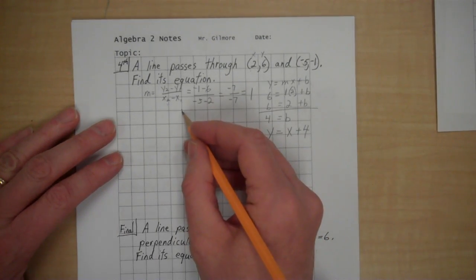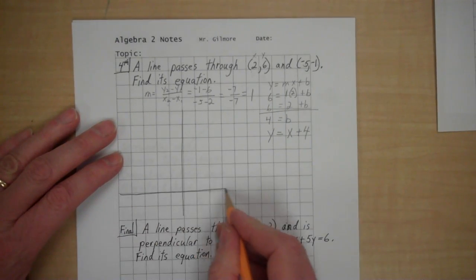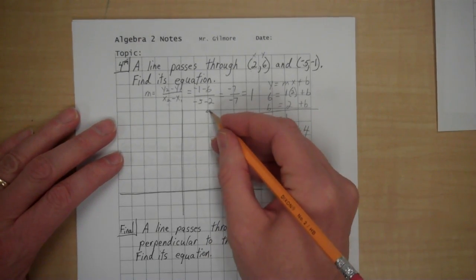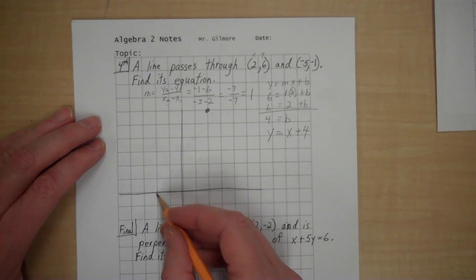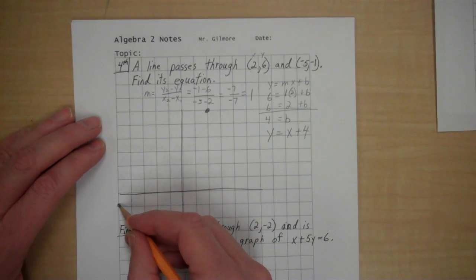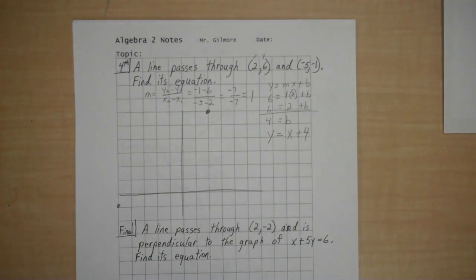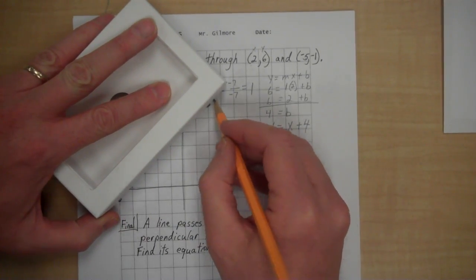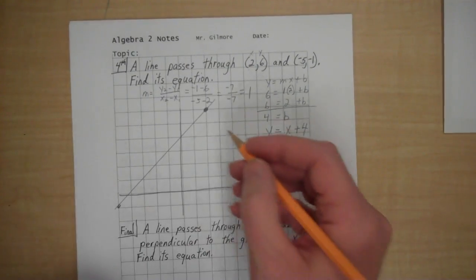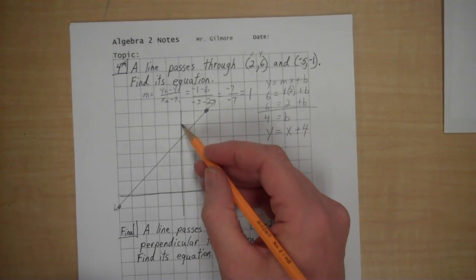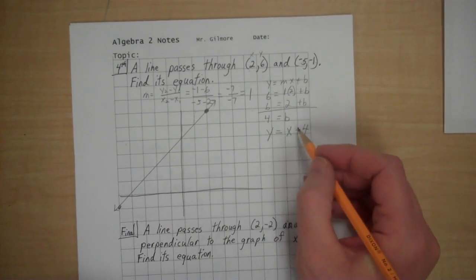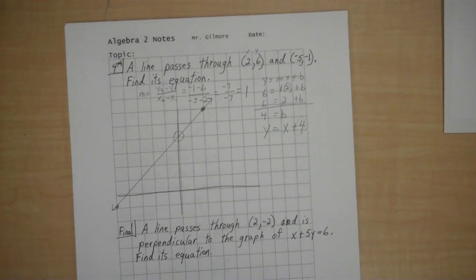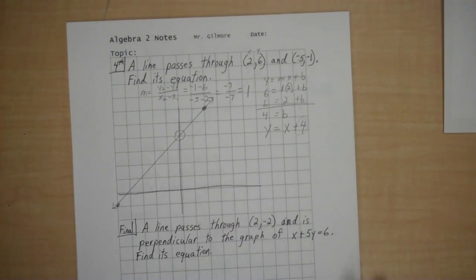So my equation is y equals 1x. I'm not going to write the 1. Plus 4. Now, as I look at that, let's graph that and just see if it checks out. (2, 6): 1, 2, 3, 4, 5, 6 is right there. Negative 5: 1, 2, 3, 4, 5. Negative 1. Now, let me get a straight edge here. I want to do a little better on my line here than I have been. Draw through there. Okay. Up 1 over 1. Up 1 over 1. It looks like the slope is 1. So I'm happy with that. 1, 2, 3, 4. That is the y-intercept and that matches our equation. So the graph is consistent with the equation from what we've said.